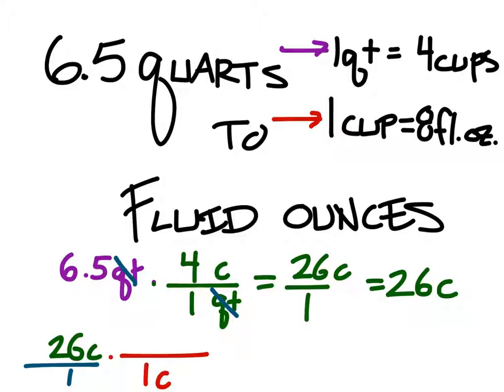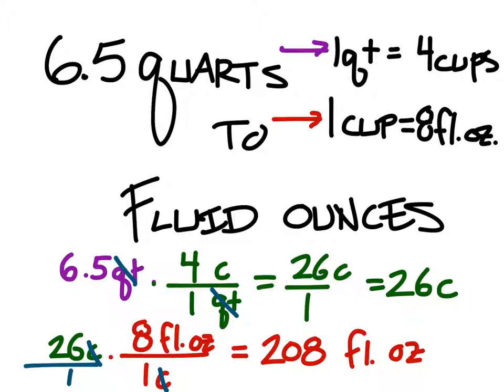But it's one cup for every eight fluid ounces. So we can see right here as well that the cups are going to cancel. And I have 26 times 8, which will give me my answer in fluid ounces. And right here I have 208 fluid ounces. And that would be my final answer right there.